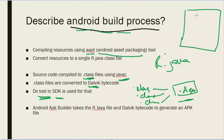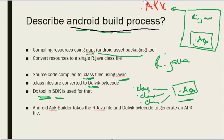Both the R.java and the .dex file are then combined to generate the final APK — the .apk file — which is just like an executable on Windows. This APK can then be downloaded from the Google Play Store whenever you install an app.